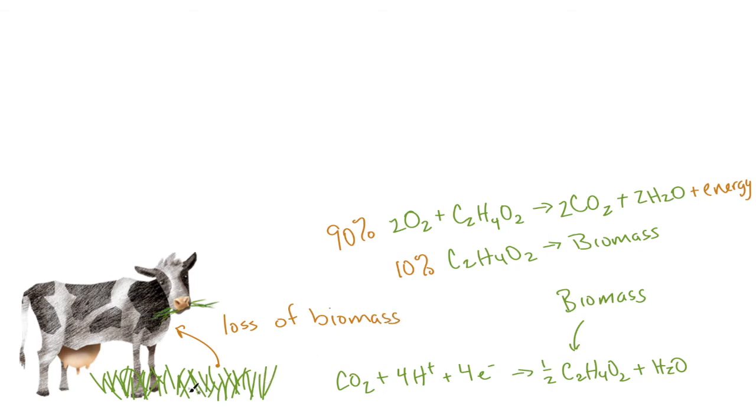And that means that you'll have to have about 10 times more photosynthesis creating biomass than you have accumulation at the next trophic level.